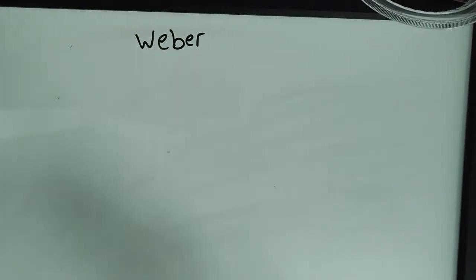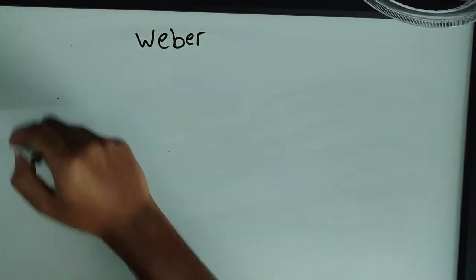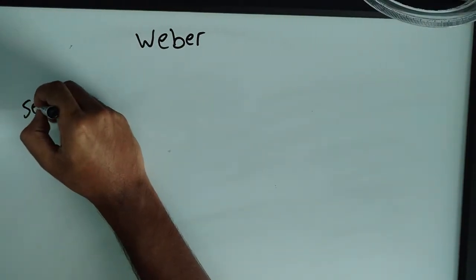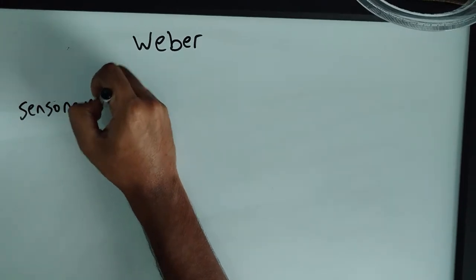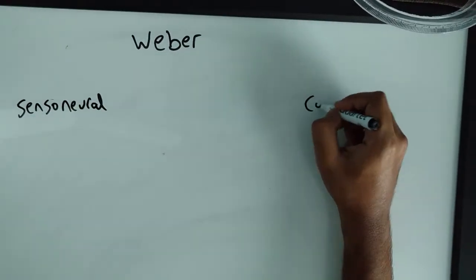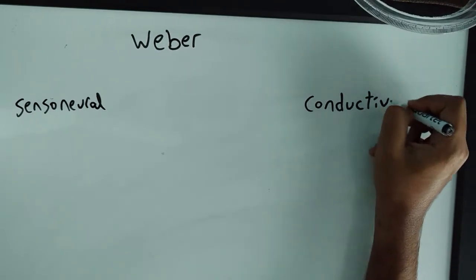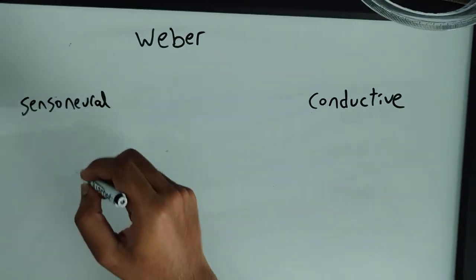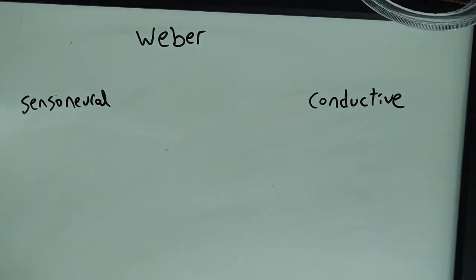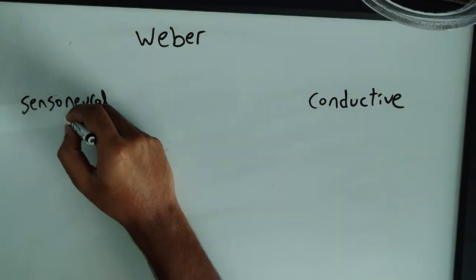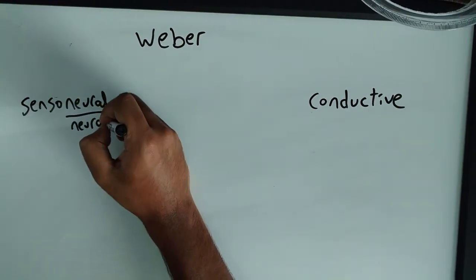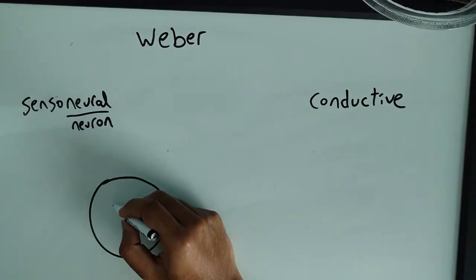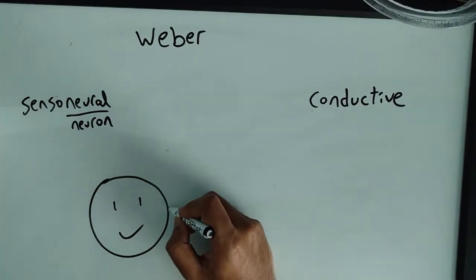This is the Weber test. We're going to see how it looks in a person with sensorineural hearing loss versus conductive hearing loss. For sensorineural hearing loss, this is a patient with a left ear and right ear — he comes in with left-sided hearing loss.